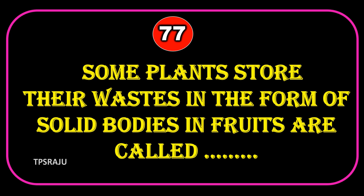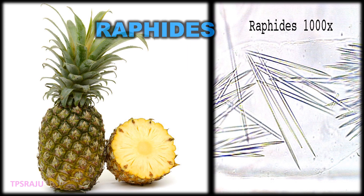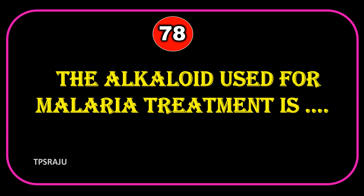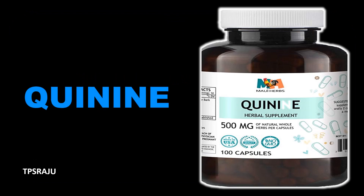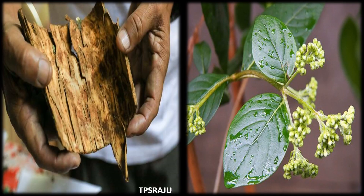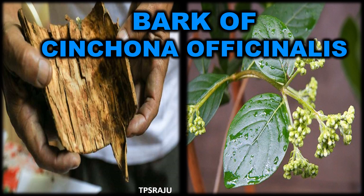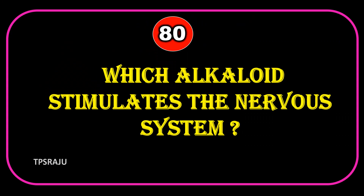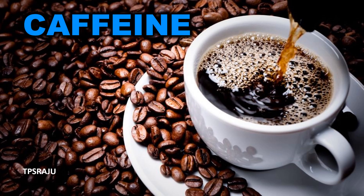Some plants store their waste in the form of solid bodies in fruits, called raphides. The alkaloid used for malaria treatment is Quinine. Anti-malarial drug Quinine is derived from Cinchona bark. Which alkaloid stimulates the nervous system? Caffeine.